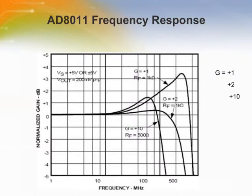The frequency response of the AD8011 CFB op-amp is shown for various closed-loop values of gain: +1, +2, and +10. Note that even at a gain of +10, the closed-loop bandwidth is still greater than 100 MHz. The peaking which occurs at a gain of +1 is typical of wideband CFB op-amps when used in the non-inverting mode and is due primarily to stray capacitance at the inverting input. The peaking can be reduced by sacrificing bandwidth and using a slightly larger feedback resistor.